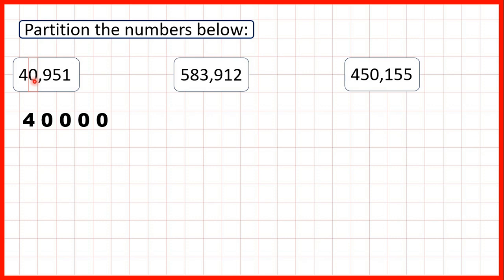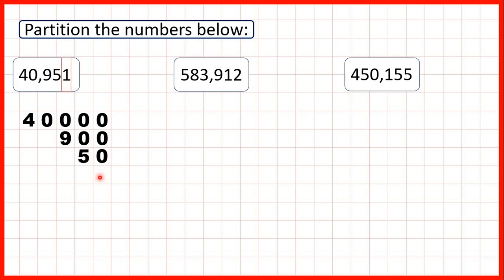We need this zero in our thousands to show that the 4 is in our 10,000s. If we didn't have the zero, the 4 would be in our thousands, so we need this zero here to act as a placeholder, but it doesn't have any value in itself. So we can move on to our hundreds digit — we have a 9, so that's 900. Then we have 5 in our tens, so that's 50. And 1 in our ones is just 1.